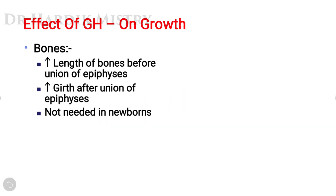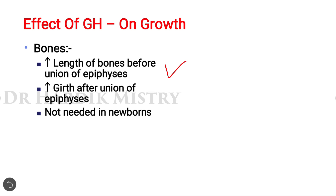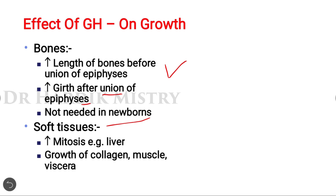The effect of growth hormone on bone growth: before the union of the epiphysis, there will be an increase in the length of bones. After union of the epiphysis, the length of the bone will not increase, but the girth — meaning the thickness — of the bone increases. In soft tissues, growth hormone increases mitosis, for example in the liver, and promotes growth of collagen, muscle, and viscera.